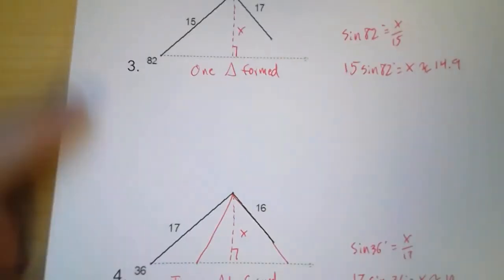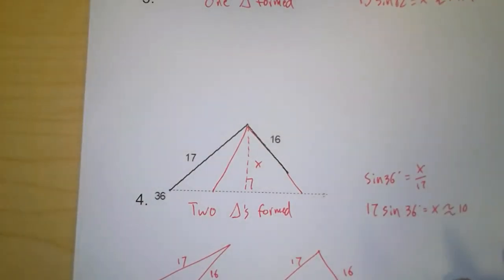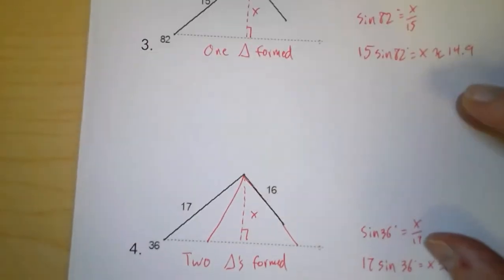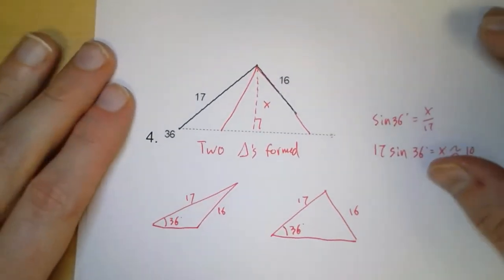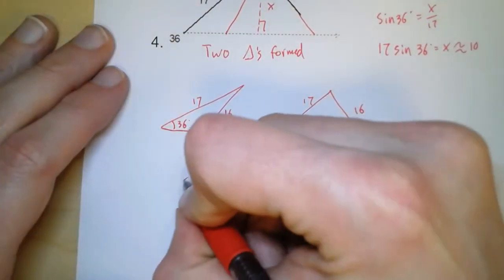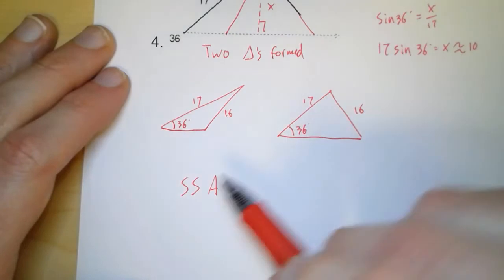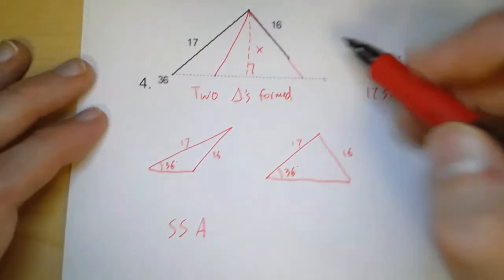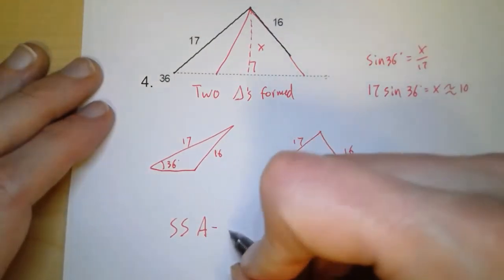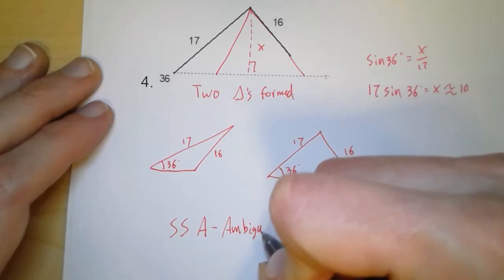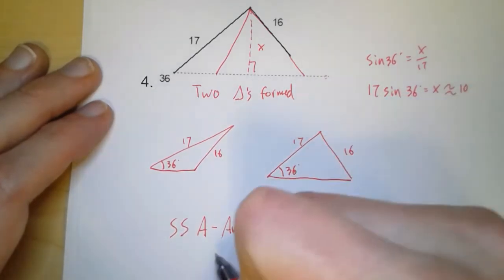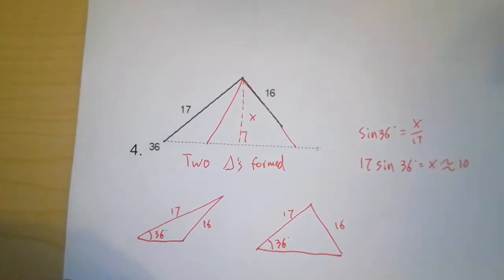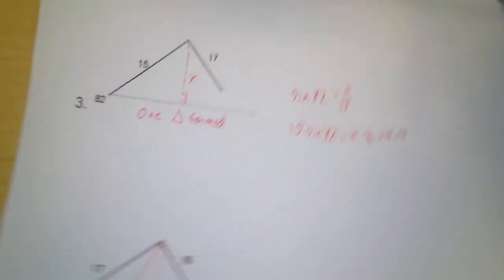And so in all of these cases, we had, in example one, no triangle formed. In example two, we had one. Here, in example three, we had one. Here, in example four, we had two. What they all have in common is that they all are given side-side-angle. You're given two sides and an angle that's not between them. And so when you're given that information, you have to be aware of the ambiguous case. That's the key thing. When you have this ambiguous case, you could have zero, you could have one, or you could have two possible triangles when you have side-side-angle.